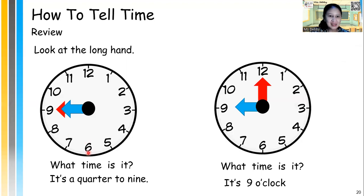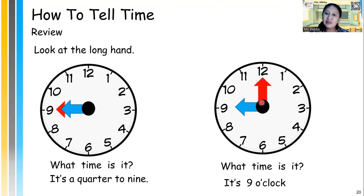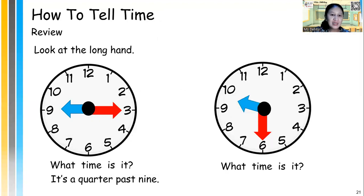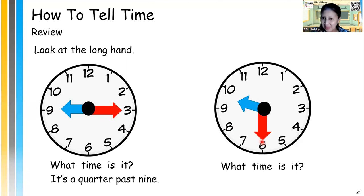What about this one? What time is it? Remember, it's a quarter to 9. When the long hand is at number 9, it's a quarter to. And then the next one — what time is it? It's 9 o'clock, because the long hand points at number 12. And then: it's a quarter past 9, because the long hand is pointing at number 3. Now it's your job — what time is it? The long hand is at number 6, so it's half past 9.